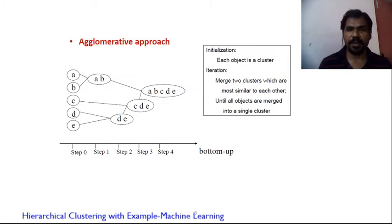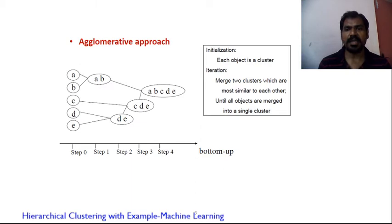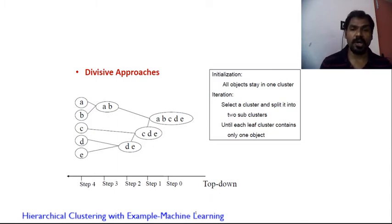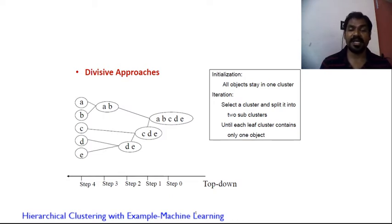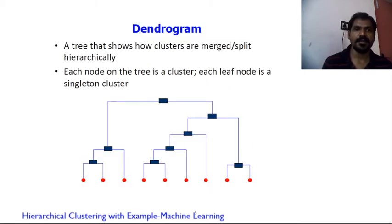In the agglomerative approach, initially each object is its own cluster. At each iteration, merge the two clusters most similar to each other until all objects are merged into a single cluster. In the divisive approach, all objects start in one cluster. At each iteration, select a cluster and split into two until each leaf cluster contains only one object — that is top-down.